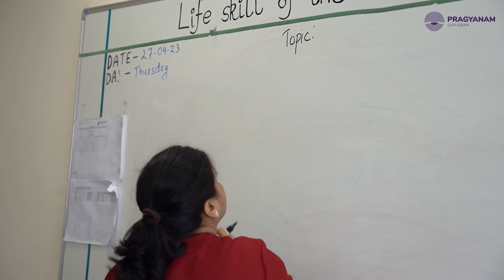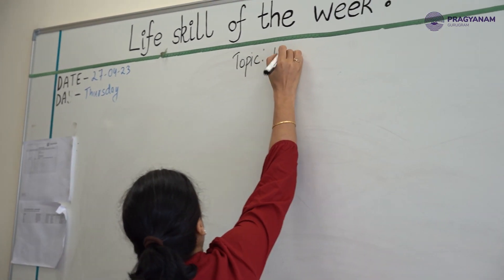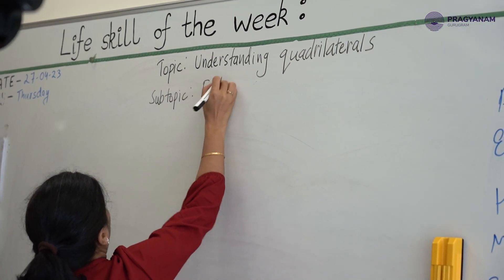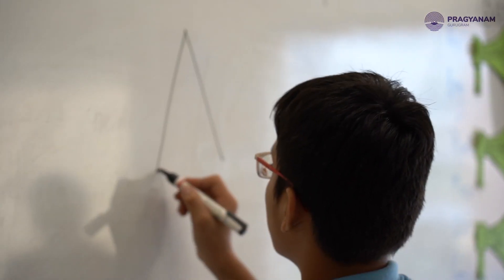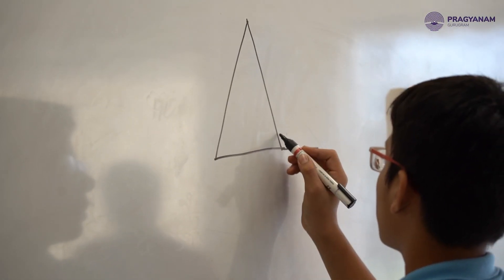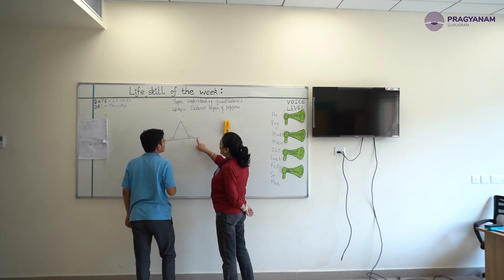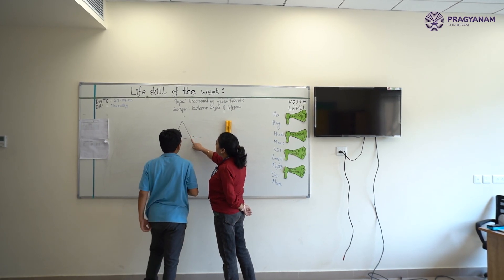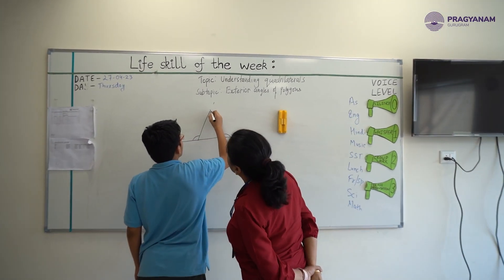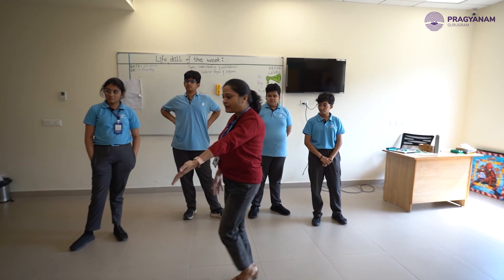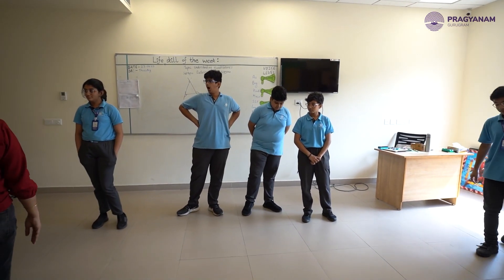Today's topic for Grade 8 is understanding quadrilaterals — specifically the exterior angles of polygons. We derived the exterior angle sum property of polygons in three steps: first, creating a polygon; second, finding all the exterior angles of that polygon in sequence; and third, finding the sum of all those exterior angles.